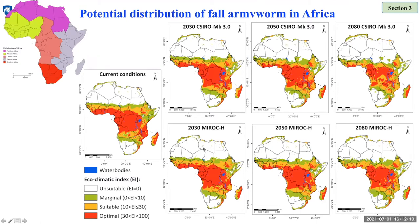According to the model results, fall armyworm can establish itself in almost all countries in Eastern, Central, and large parts of Western Africa under current climate conditions. Under future climate conditions — with models for 2030, 2050, and 2080 under two different climate change scenarios — both models suggest that the fall armyworm establishment range will decrease over time. However, large parts of Eastern and some parts of Central and Western African countries can still support fall armyworm through to the end of 2080.